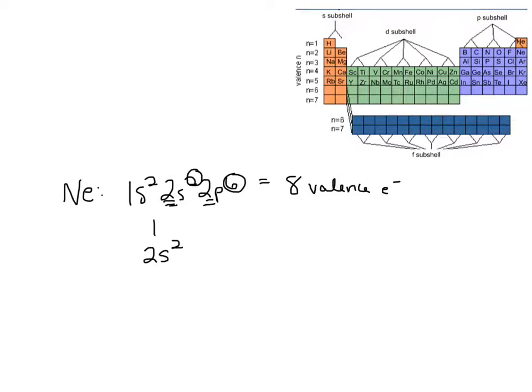2s² would correspond to one box for s, and there would be two arrows in it. And we would fill it like that. We would always fill that s first. And then, after that, we would move on to the 2p. And how many boxes for p? It would be one, two, three boxes to represent three orbitals.